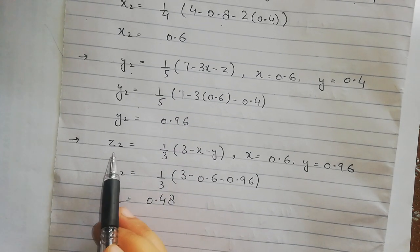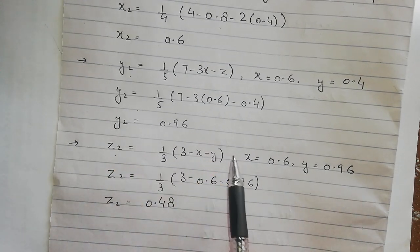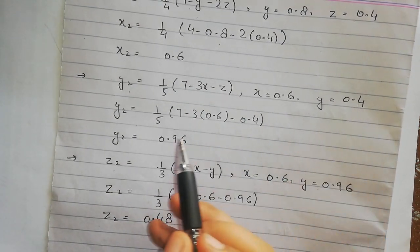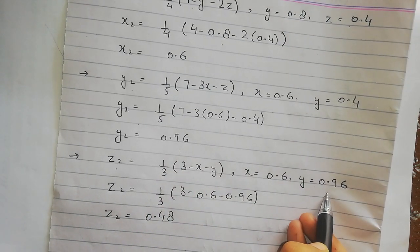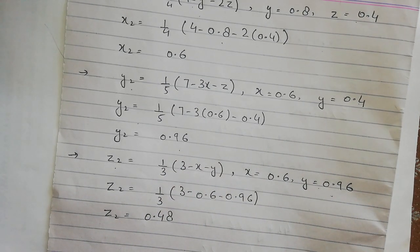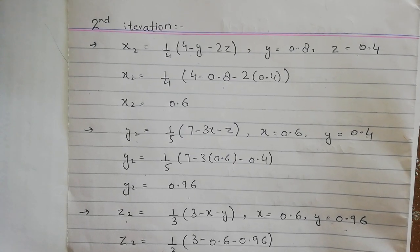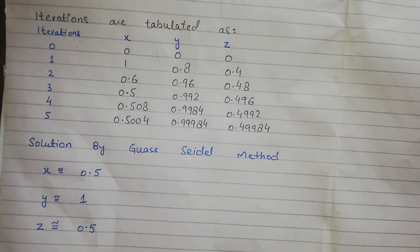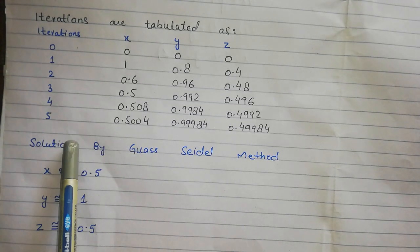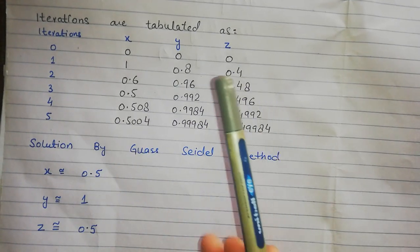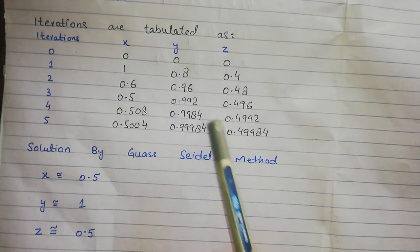In this way we continue solving the iterations. We keep doing iterations until the answers start repeating — typically 5 to 6 iterations. It depends on when the answers converge. In this particular example, I have done 5 iterations. After completing the iterations, you write all the values in a table, which makes it easy to read and compare the answers.